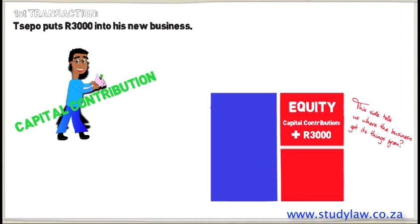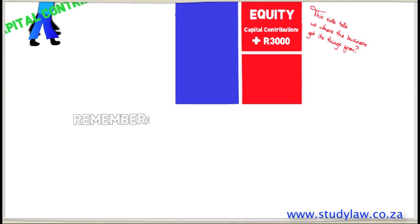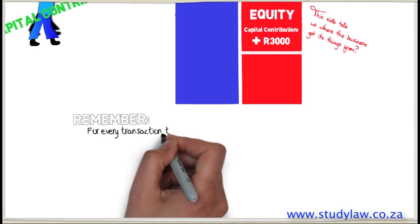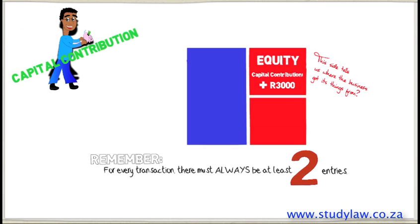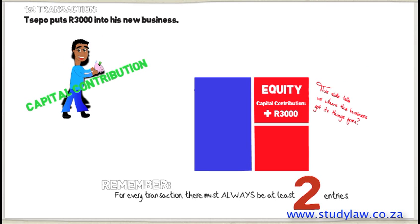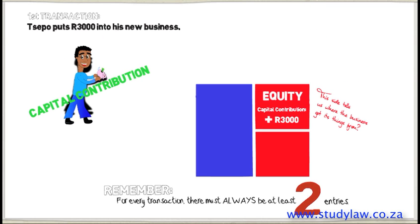we will show the R3,000 on the red side in the equity block. Remember, this side tells us where the business got its money from. For every transaction, there must always be at least two entries. We already know that both sides of the square must be equal to each other. We can see that the blue side is not equal to the red side, so we need to record the second entry.